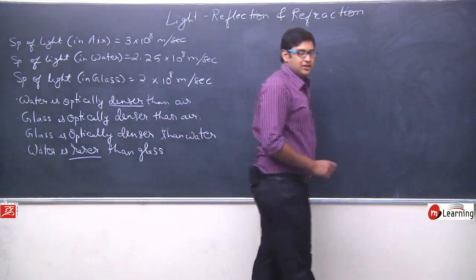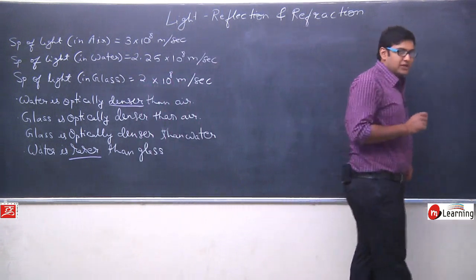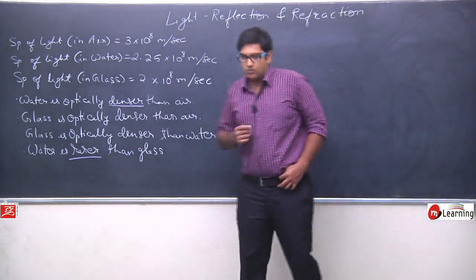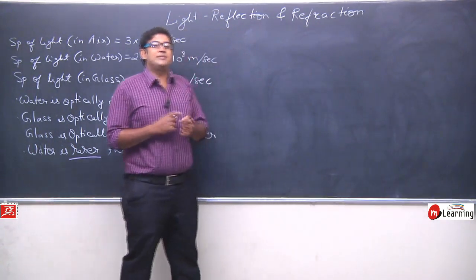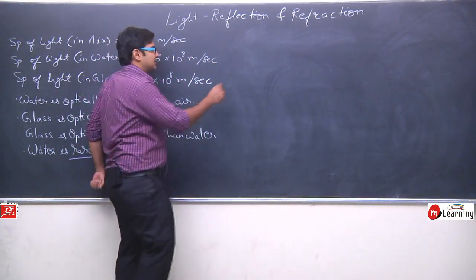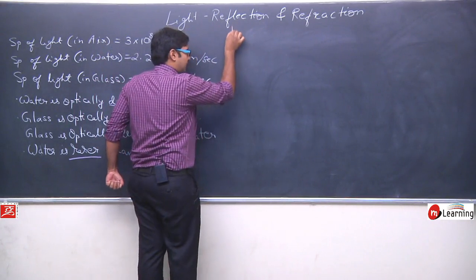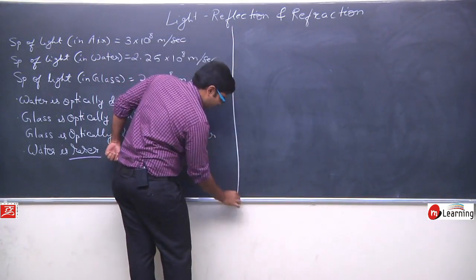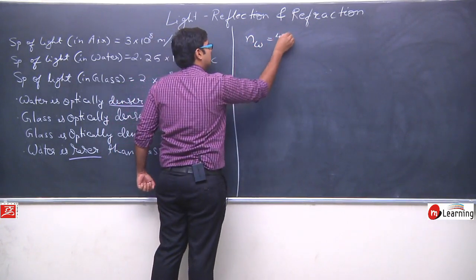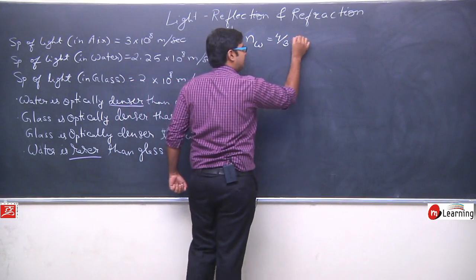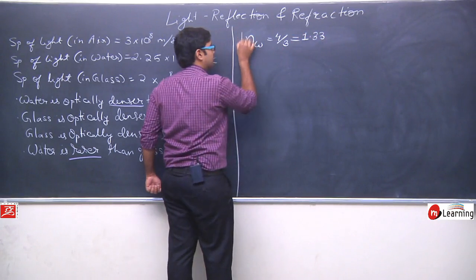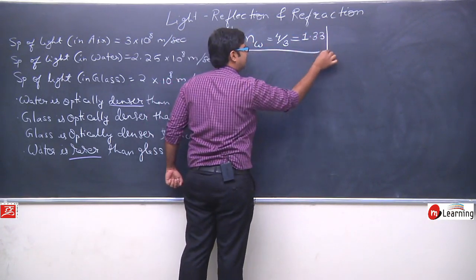Okay, so humne abhi calculation kiya, humne refractive index of water ko calculate kiya us formulae ke basis pe. Refractive index of water is equals to 4 by 3, aur 4 by 3 ko divide kar denge, you will get 1.33. This is the refractive index of water.